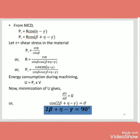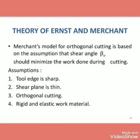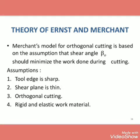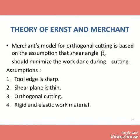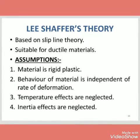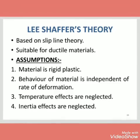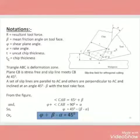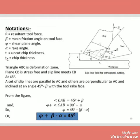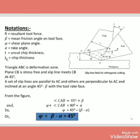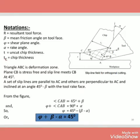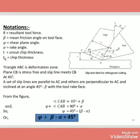Next is the theory of Earnest and Merchant. Merchant's model for orthogonal cutting is based on the assumption of shear angle beta-0. Assumptions include: the tool edge must be sharp, the shear plane is thin, orthogonal cutting, and rigid and elastic work material. The Lee-Shaffer theory is based on slip line theory suitable for ductile material, where the material is assumed to be rigid and plastic. In the slip line field for orthogonal cutting: R is the resultant tool force, beta is the mean friction angle at the tool face, alpha is the rake angle, t is uncut chip thickness, and T is chip thickness. The triangle ABC represents the deformation zone.